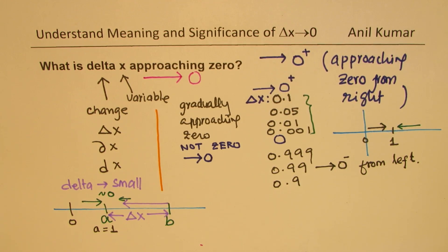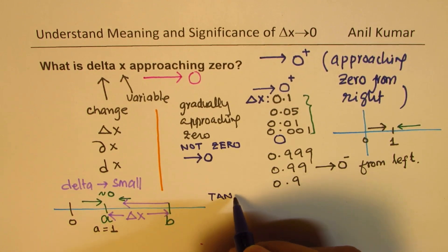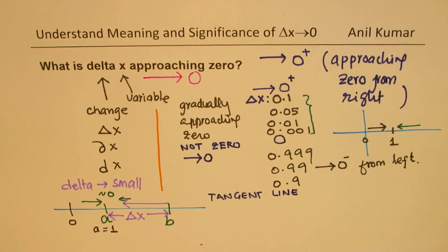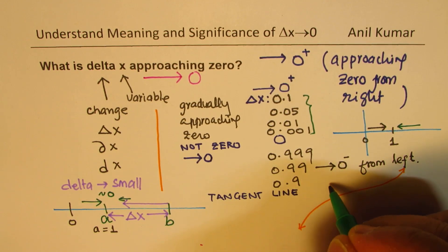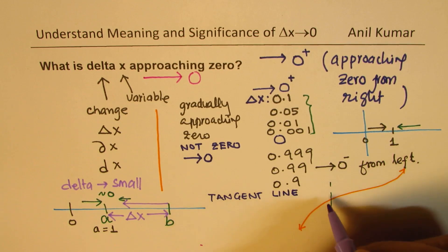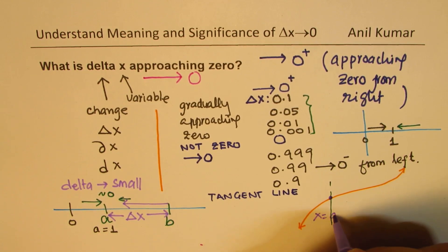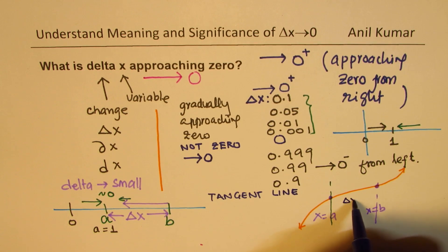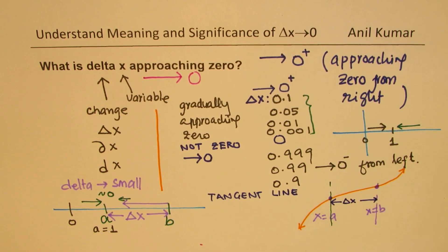This concept is extremely useful since it gives you the idea of many things. A major application you see in calculus is about the tangent definition. If we have a curve and we want to find the tangent at a particular point, what we can do is take another point — let's say this is point A where x equals A. We take another point B somewhere away, where x equals B, with the difference between the two being Delta X. This difference is the change in x value, which is Delta X.